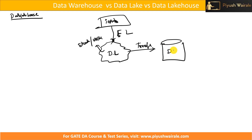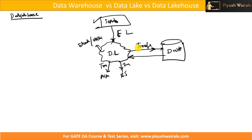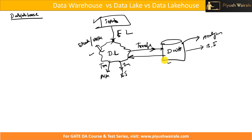From the data lake, we transform our data into a structured format and then store it into a data warehouse. We can also take data from the data warehouse back to the data lake. We can then transform the data for multiple purposes — AI/ML models, business intelligence, or data analytics. So we extract from input, load to a data lake, apply transformation to store into a data warehouse, and use that data for different purposes.